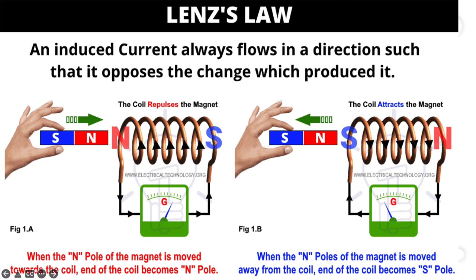Looking at the diagram of Lenz's Law: a coil of wire and a magnet are shown. When the magnet moves in one direction, the induced EMF flows in a direction that opposes that movement. When the magnet is moved in the opposite direction, the direction of the induced current also changes. This is Lenz's Law — the induced current always flows in a direction that opposes the change which produces it.